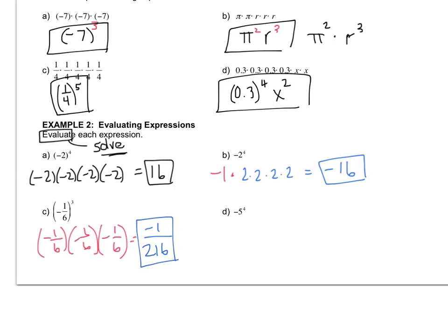And again, let's be careful with the negative sign. This is saying negative 1 times 5 to the 4th. And so that is negative 625.